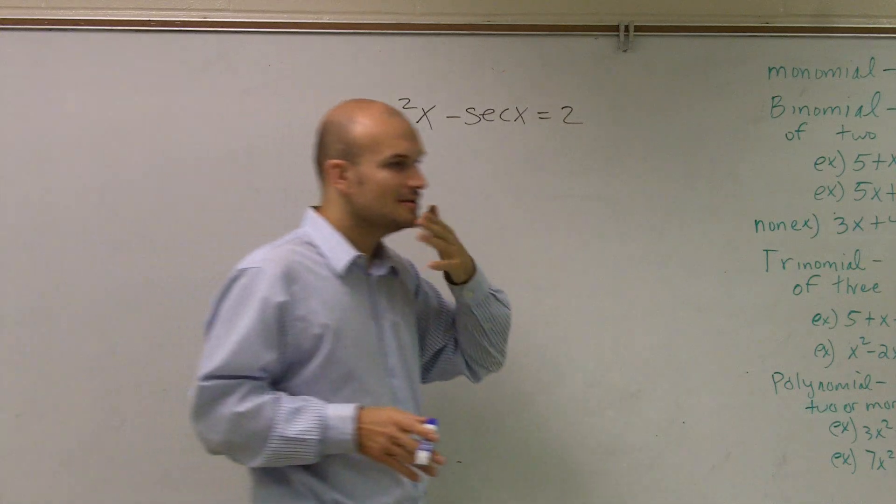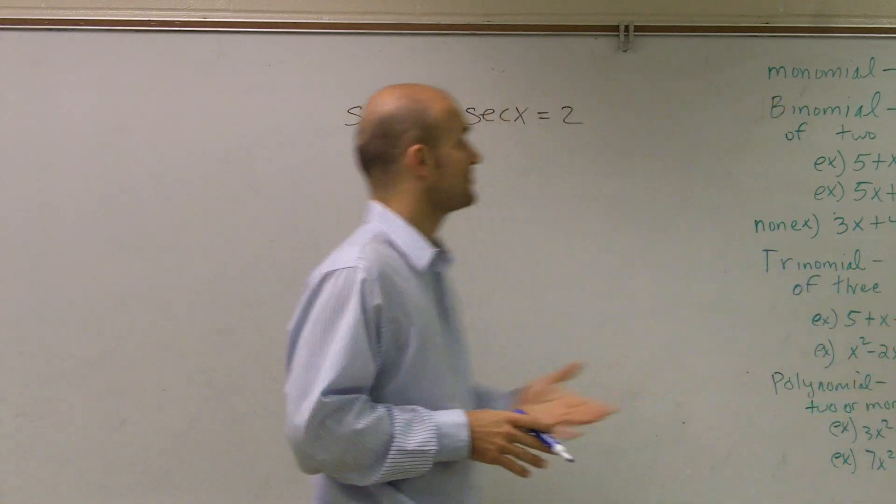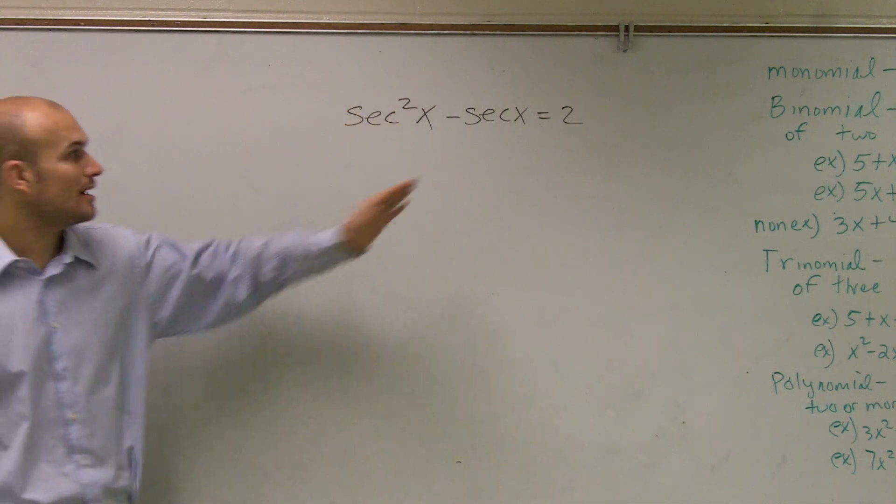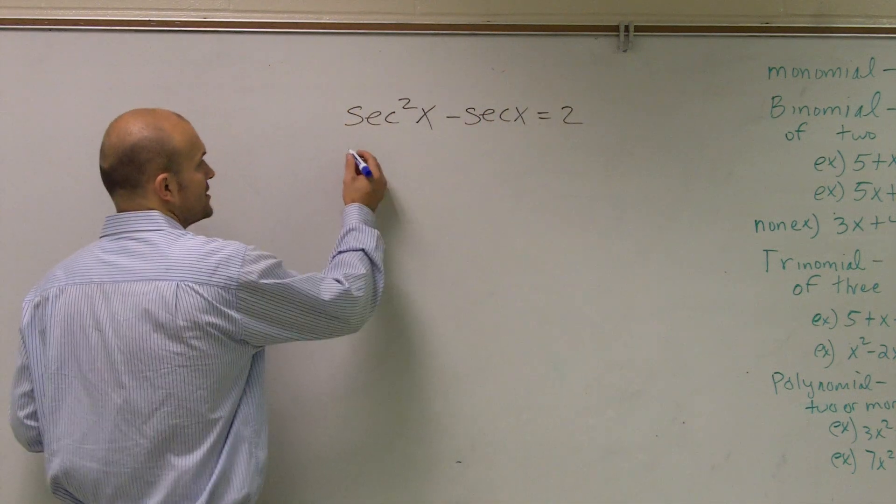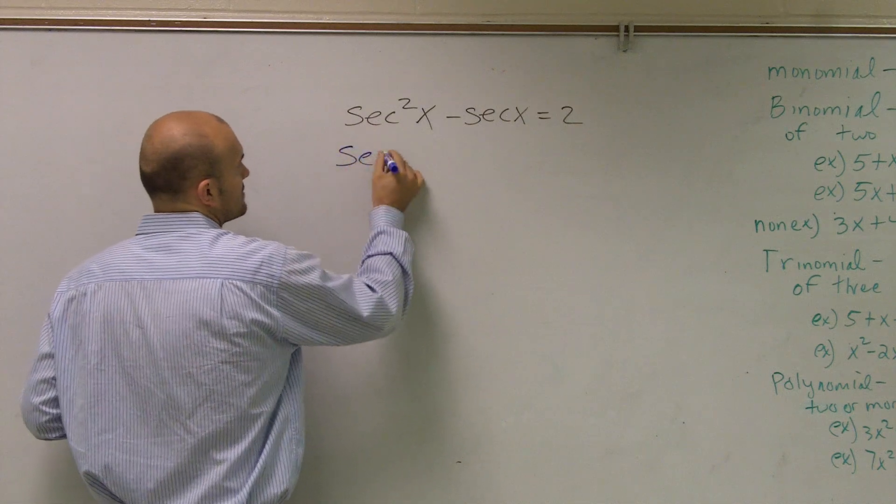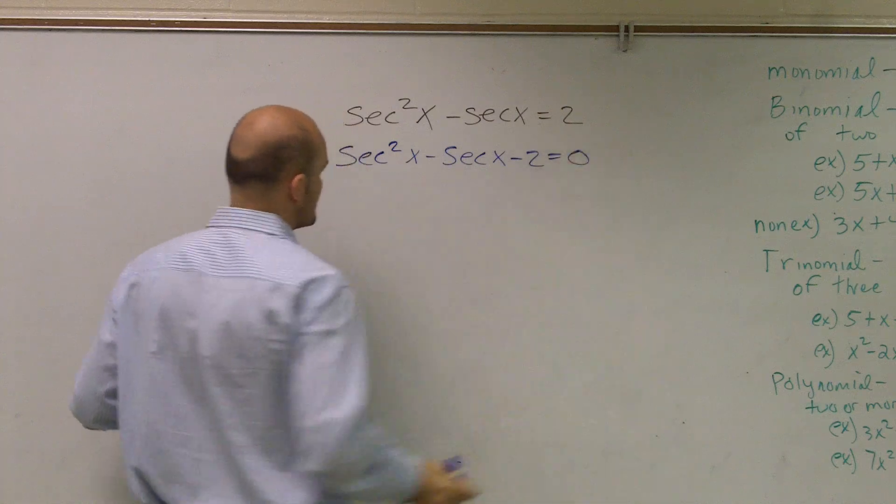So one thing that automatically triggers in my brain is to start thinking of factoring. When I'm going to want to factor, I'm going to want to make sure I get all my terms over to this left side and I can factor so that it equals 0. Therefore, I have secant squared of x minus secant of x minus 2 equals 0.